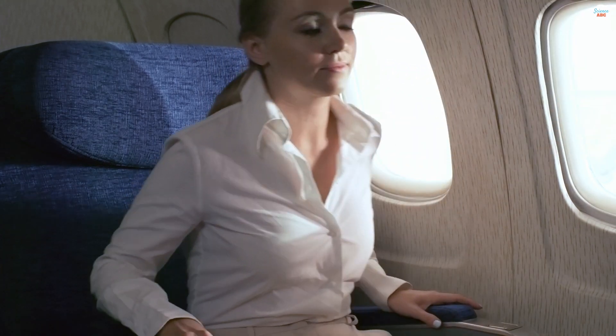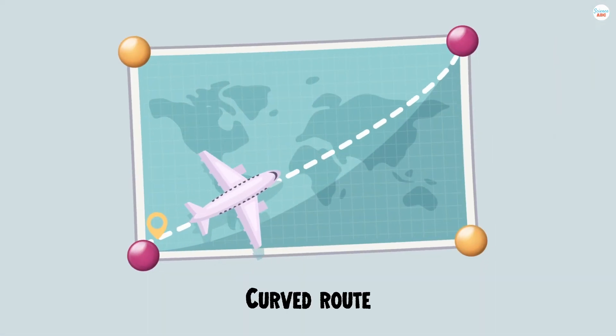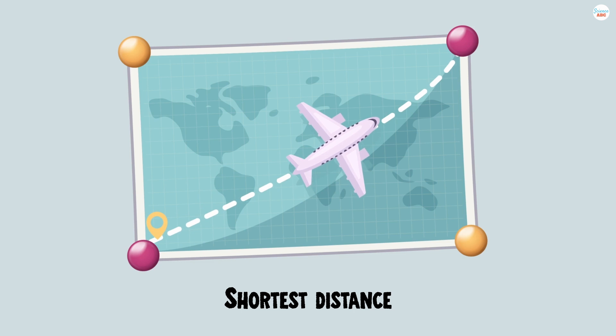People who have traveled by air have likely noticed that flights don't follow a direct path but instead take a curved route to their destination. The curved routes are used because they're actually the shortest distance between those two locations on our planet.